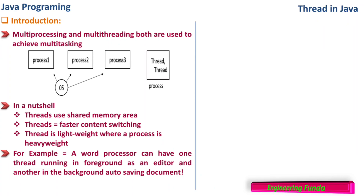For example, a word processor can have one thread running in the foreground as an editor and another running in the background auto-saving the document. So for a word processor, the first thread is the editor where we can write content, and there is another thread running in the background auto-saving the document so that you don't lose it if something goes wrong with the system.